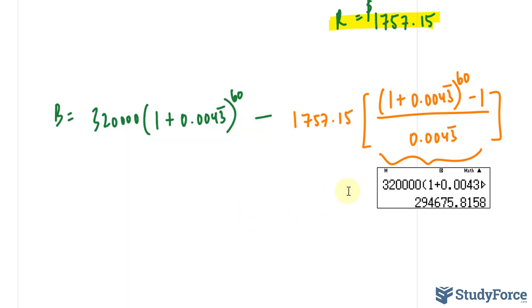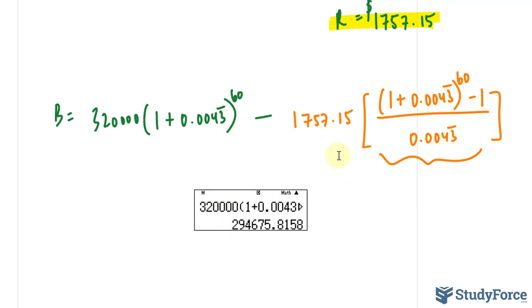So I'll copy that, paste it right there. So this is how much is outstanding after 5 years of making a payment that's this large every month.